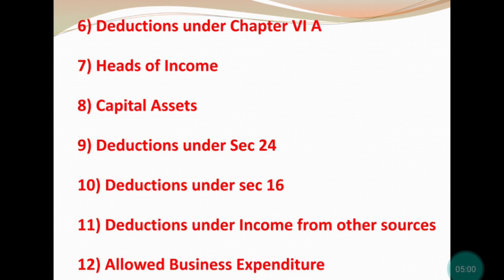Next is allowed business expenditure — this is from the chapter of income from business & profession। Which incomes/expenses are allowed — उसके साथ disallowed वाला भी पढ़के रखें, क्योंकि किसी paper में allowed पूछा गया और किसी में disallowed भी पूछा गया।